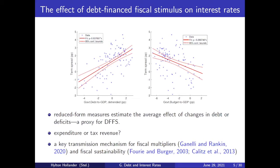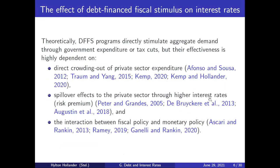What we actually see is that if you use this reduced form measure of debt or the deficit, the average effect you get on the risk premium is very similar to the combined effect you get when you look at the disaggregated measures. Theoretically, these debt-financed fiscal stimulus programs will stimulate aggregate demand through either expenditures or tax cuts. But the effectiveness is highly dependent on the degree of crowding out of private sector expenditure, spillover effects of the risk premium to the private sector, and the interaction between fiscal policy and monetary policy. These are the three main channels I will be focusing on.